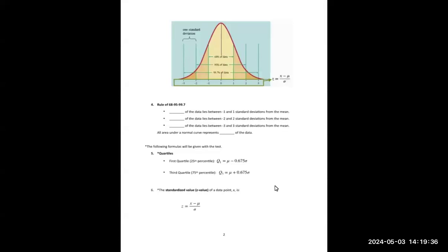So filling that out: 68 percent of the data falls between negative one and positive one standard deviation — within one standard deviation, meaning one below and one above. Ninety-five percent of the data is between two standard deviations of the mean, and 99.7 percent is between three standard deviations of the mean. Then they say all of the area underneath the curve is 100 percent of the data — written as a decimal that's just one, or in percent form it's one hundred percent.